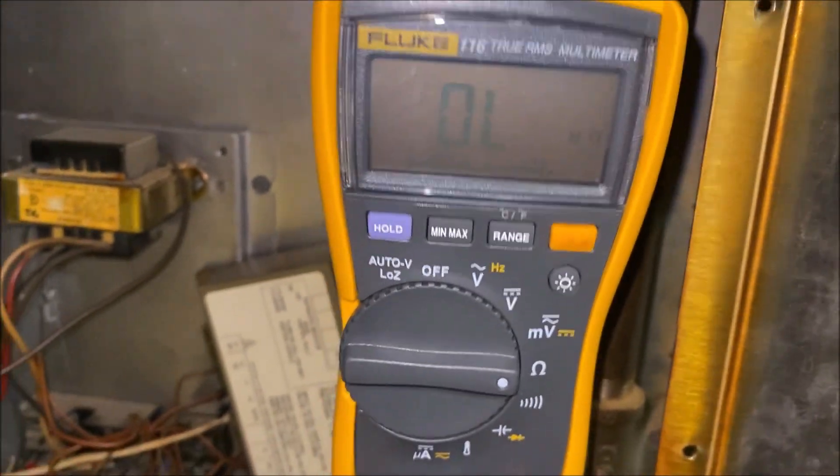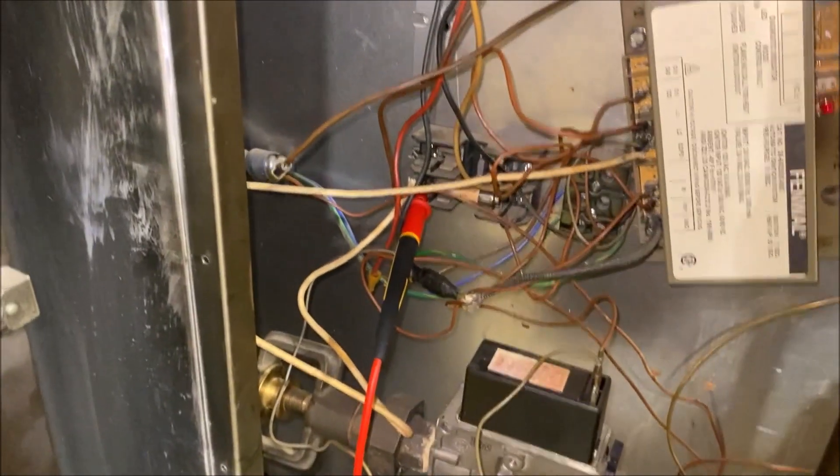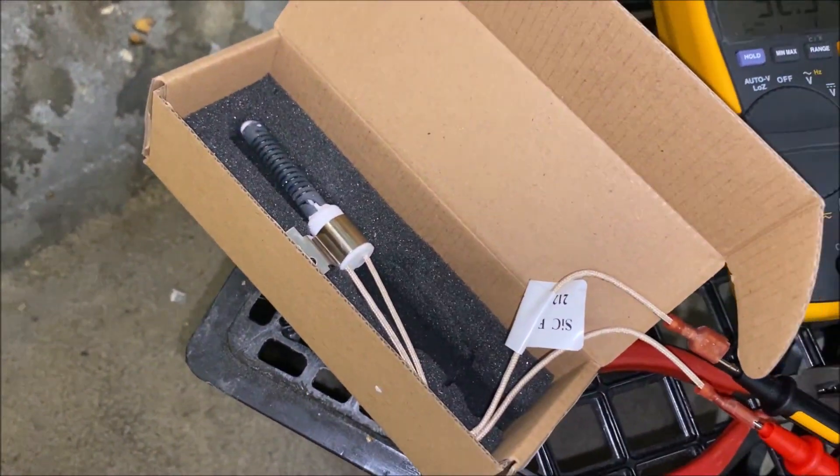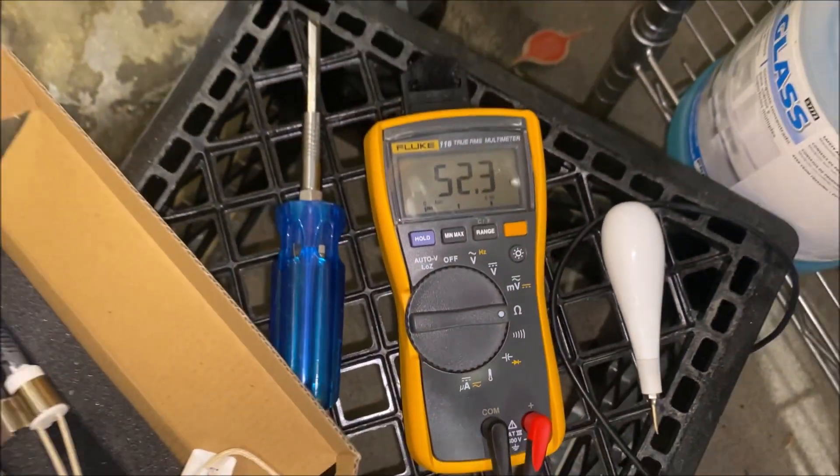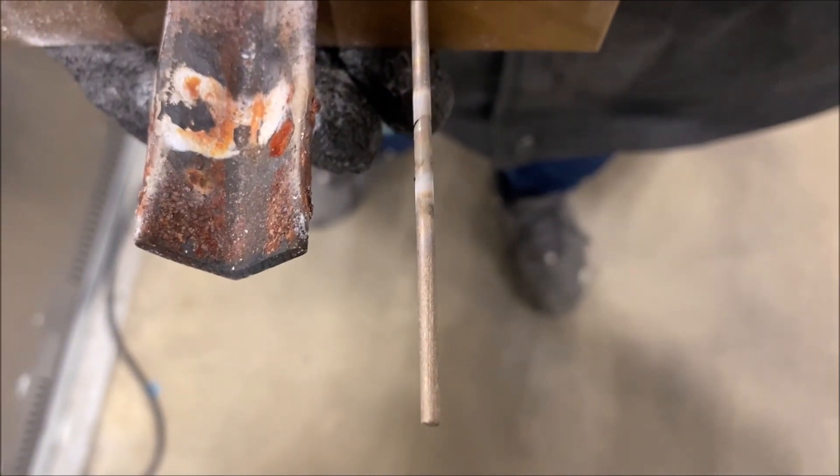Let's ohm out our igniter at the fuse. Open line. We may have a broken wire. Let's go to the back of the unit. We're at the back of the unit right at the igniter, still open line. We need an igniter. Let's get that installed. You can see 52.3 ohms is what we're looking for.